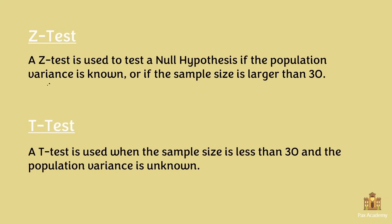A t-test, on the other hand, is used when the sample size is less than 30 and the population variance is unknown. The most common factor you'll use to determine whether to use the z-test or t-test is generally the sample size. When the sample size is greater than or equal to 30, you'll generally use the z-test, and when it's less than 30, you'll use the t-test. But sometimes for the t-test you'll also see that the population variance is unknown.